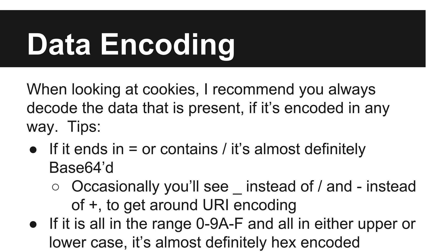Base64-encoded data generally sticks out like a sore thumb, with it ending in an equal sign most of the time due to padding. Sometimes these symbols will be exchanged to get around other secondary encoding issues like URI encoding, but this is usually pretty easy to figure out and work around. Alternatively, if you see data all in the range of 0-9 and A-F, especially if it's all upper or all lower case, this will typically tip you off that it's hex encoded.